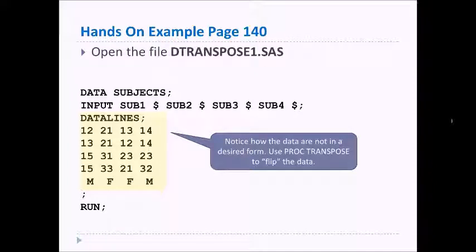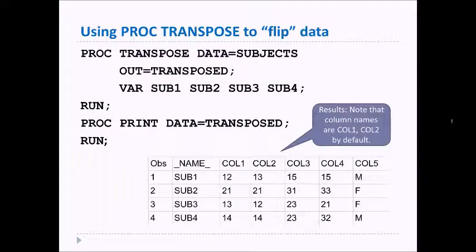This first example from page 140 is based on DTRANSPOSE1.SAS. Go ahead and open this data set and take a look at it. The program shows we're going to read in some data lines that contain four variables: subject 1 through subject 4. Well, that's not the way we usually want data to be—we want the subject to be on lines and not in columns, so we want to flip this data.